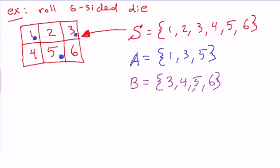So event B was the event of rolling greater than 2. So how does that look here? So that means all these outcomes qualify for event B.